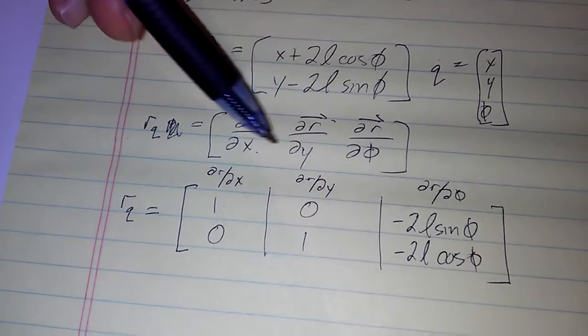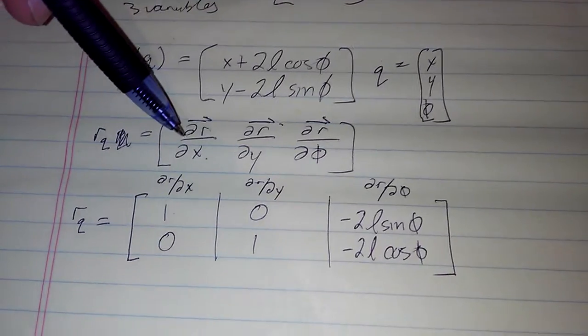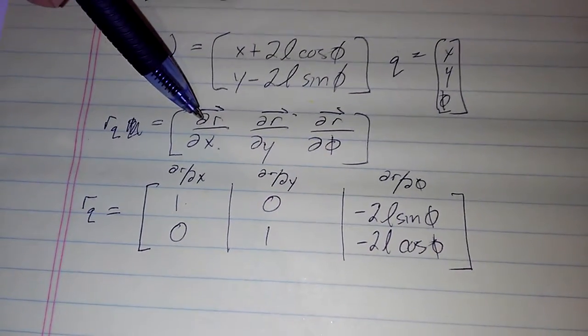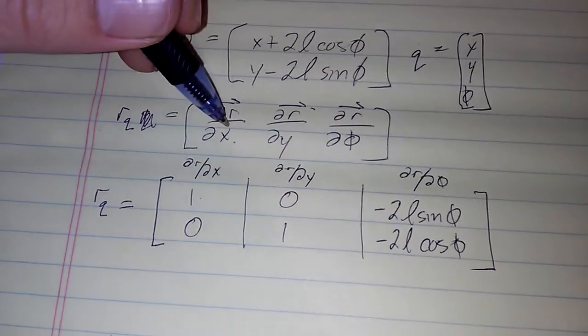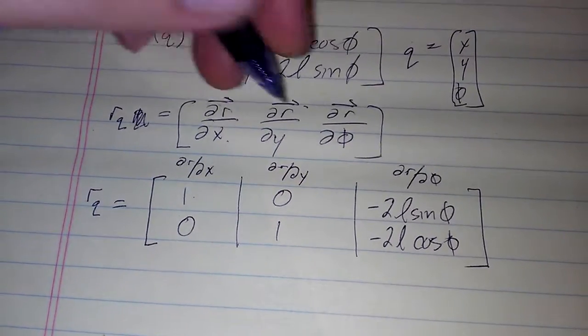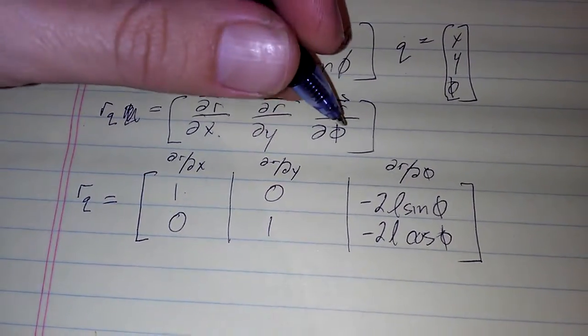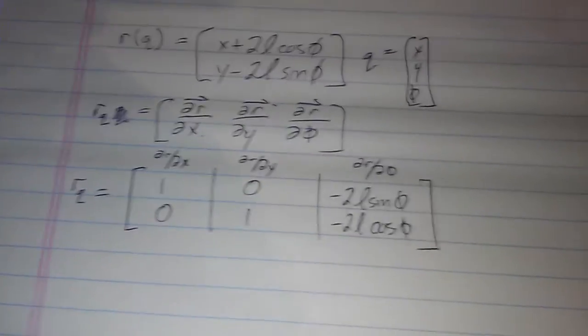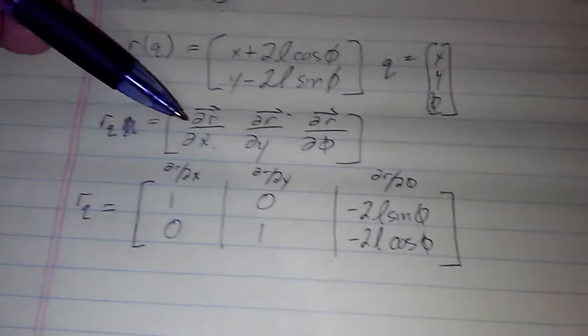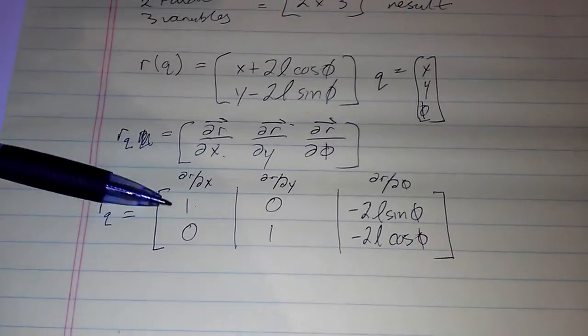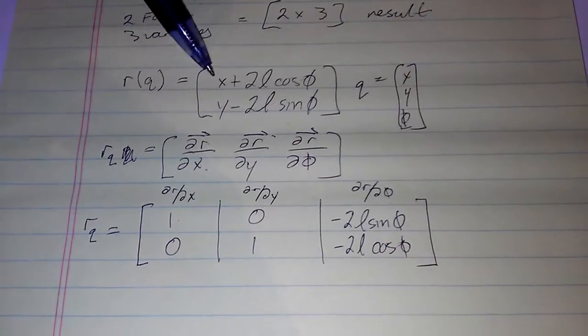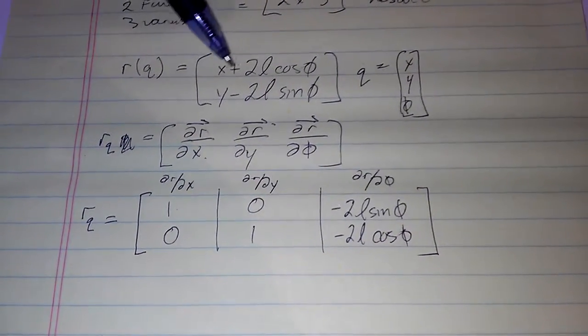So we have a three by one, or sort of a three by two if you will, matrix of dr/dx, dr/dy, and dr/dphi. And of course, each one of these is a two by one. So we come down here and we say alright, partial of this with respect to x is one, partial with respect to y is zero.